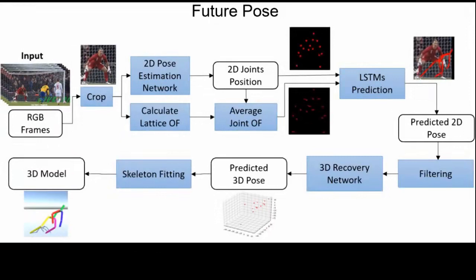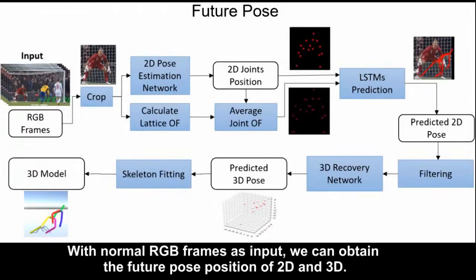Therefore, we propose Future Pose, a pose estimation system based on deep neural network. With normal RGB frames as input, we can obtain the future pose position of 2D and 3D.